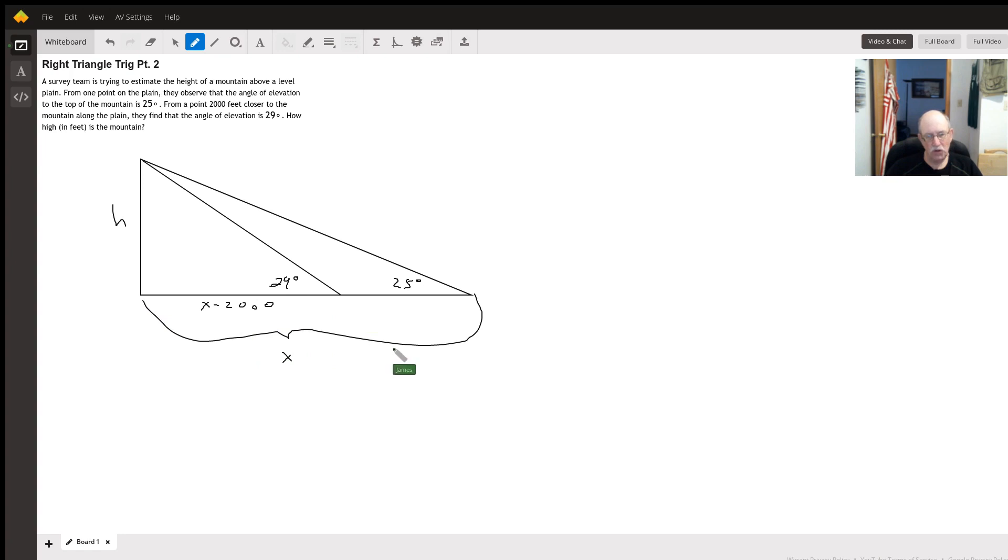Well, if we let this whole distance from the 25 degree angle equal x, the distance from the mountain to where they did the 29 degree angle has to be x minus 2,000 because it's 2,000 feet closer.